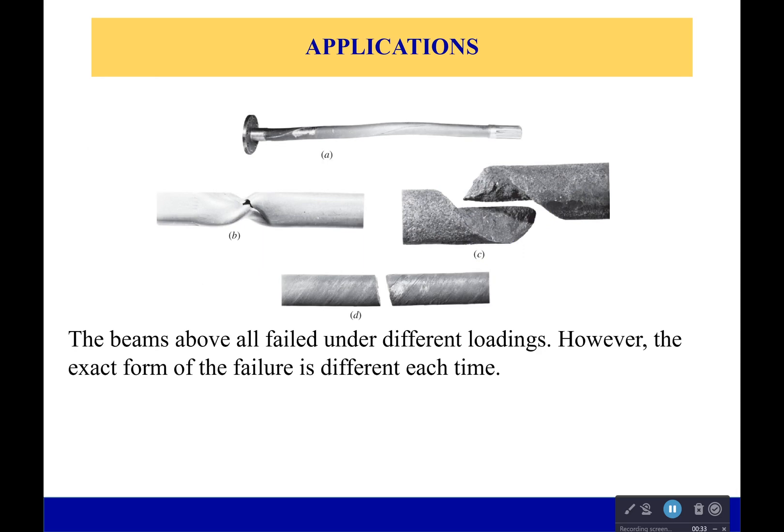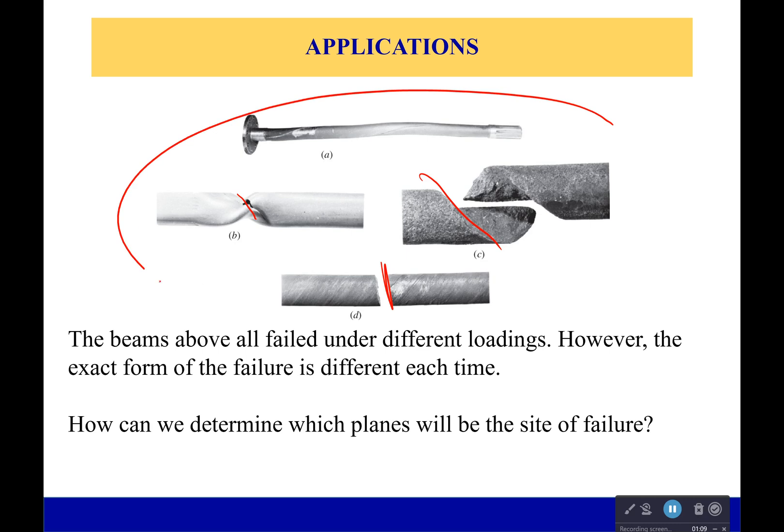Now if you look at all of these bars you can see that they all failed under loading. Loadings were different but all the loadings were a torque. But look at these planes. Some of them are almost perpendicular, not quite. Others you see we have this 45 degree angle cut here and a 45 degree angle cut here. Now how can we determine which plane a material is going to fail along? Where is it going to fail? How is it going to fail? Why is it going to fail? Well we're going to be talking about that some today.